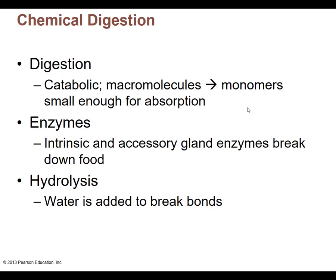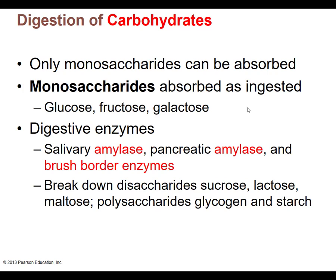As we go through digestion of different types of chemicals, I'll keep referring to page 893 in your book. You may want to pause and find that page, as I'll have snippets from that diagram. We're going to start with digestion of carbohydrates. Carbohydrates must be broken down all the way to monosaccharides — monosaccharide meaning single or one sugar. Carbohydrates are made up of sugar molecules, and we need to break them all the way down to the simplest individual sugar molecules.